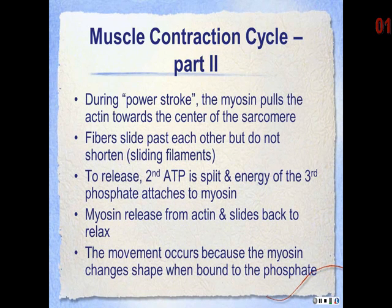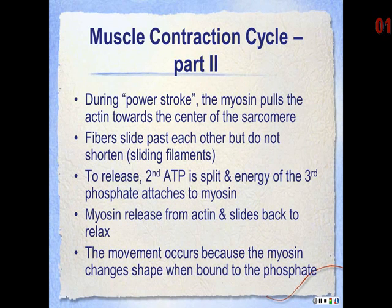During the power stroke, the myosin pulls the actin towards the center of the sarcomere. Because the actin is anchored to the Z-discs, it shortens the entire sarcomere. The fibers slide past each other but do not shorten themselves — this is the sliding filament theory.